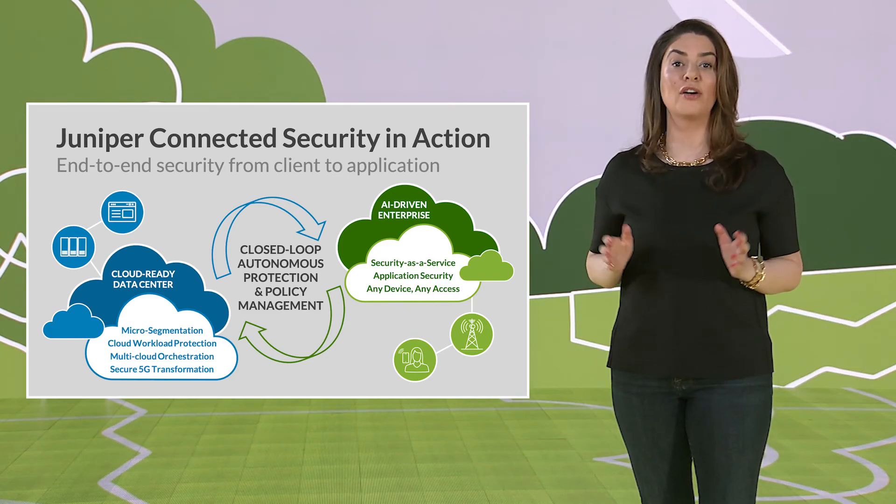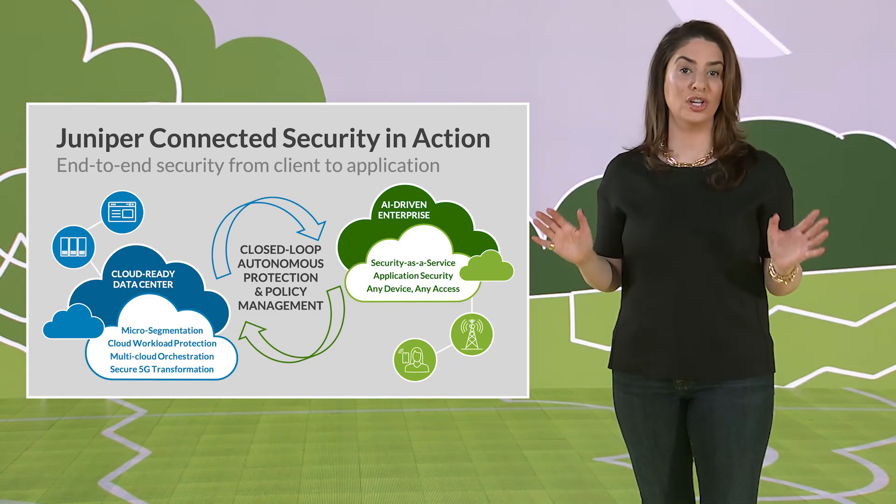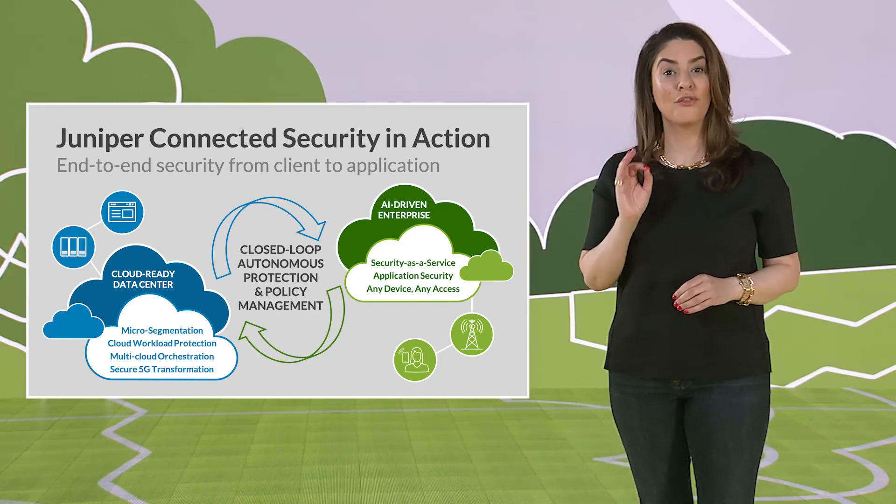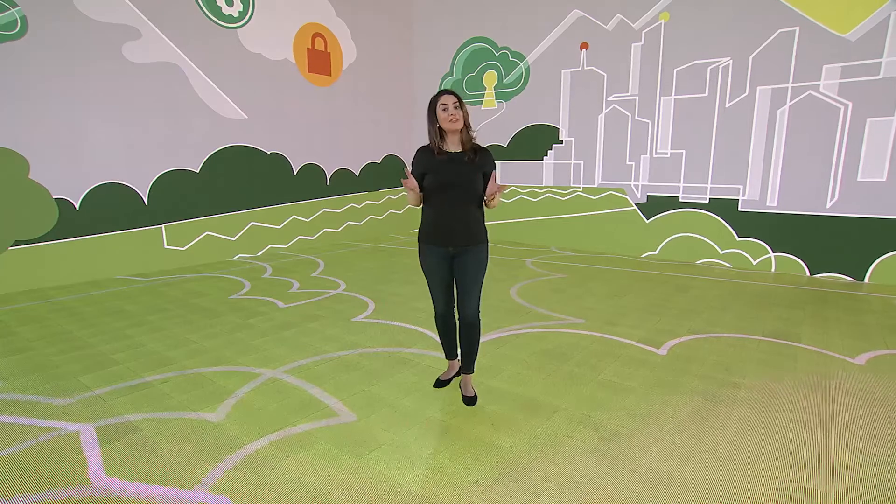Security Director Cloud offers fully integrated security with unified policies at every point of connection delivered from the cloud. Security Director Cloud is your Juniper SASE portal from client to application. Networking and security are converging. They have to come together so that we can realize the benefits of bringing applications and services closer to the end user and we can do this seamlessly and securely. That's what Security Director Cloud offers. That's SASE.